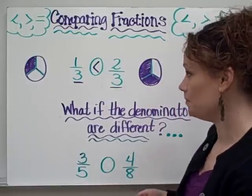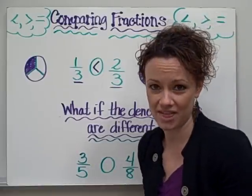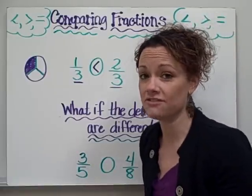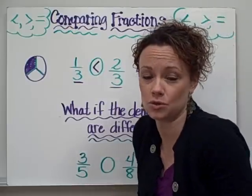As in this example. Three fifths compared to four eighths. Well it's hard to visualize a picture of that. And the denominators are different, so you can't just pay attention to the numerators. So what do you do then?